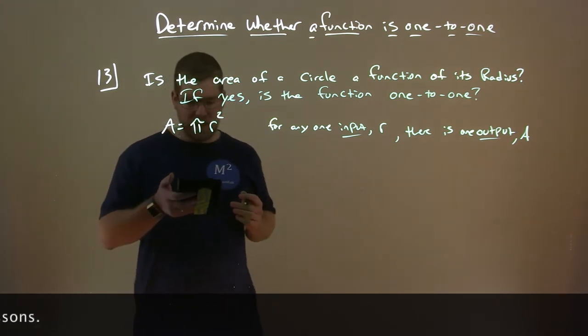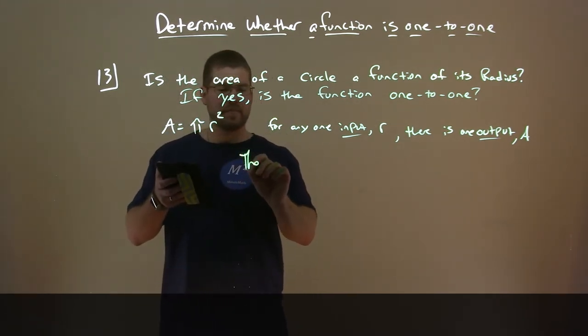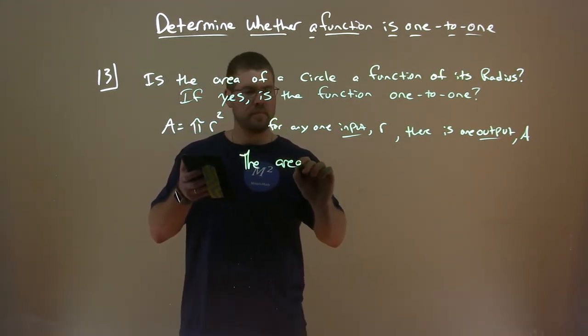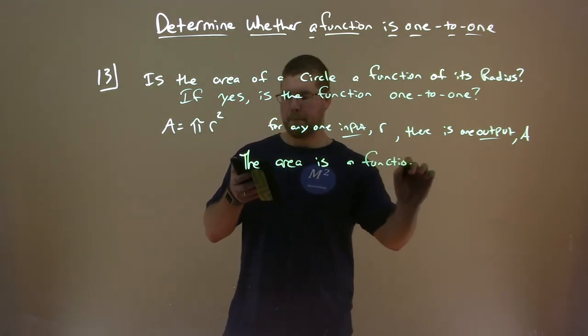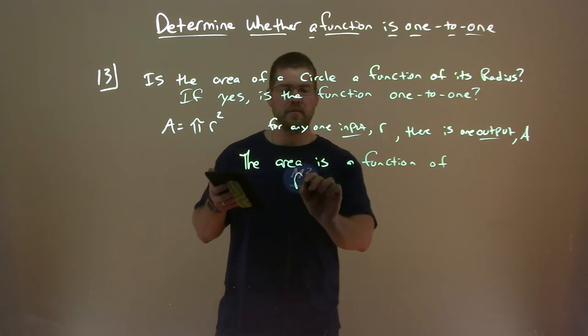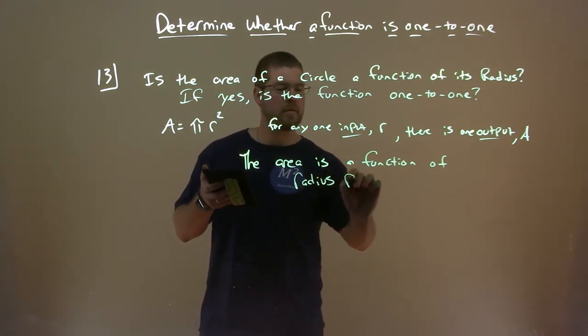will get one output there. So the area is a function of radius r.